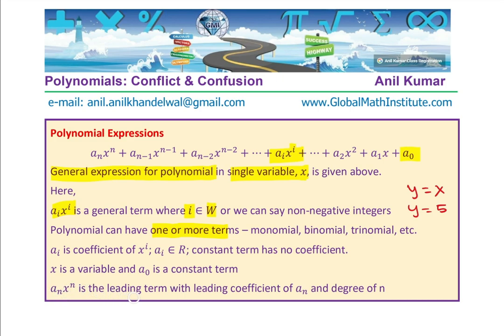a_n x^n is the leading term with leading coefficient a_n and degree of n. So every polynomial is decided with the highest power of the term which we call as leading term. So n becomes the degree, a_n becomes the leading coefficient. Giving you an example, if I write x^3 plus 3x^2 minus 5, it is of degree 3. X is a variable and the leading coefficient is 1 in this particular case.